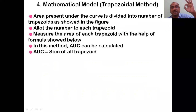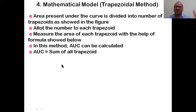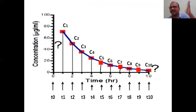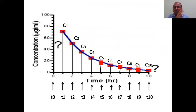The area under the curve is divided into a number of trapezoids as shown. Measure the area of each trapezoid using the formula. AUC equals the sum of all trapezoid areas. We know the concentration-time profile - at each time point they withdraw a sample from the patient, giving concentration values C0, C1, C2, C3, C4, C5, and so on.